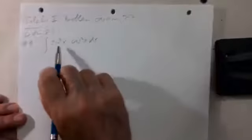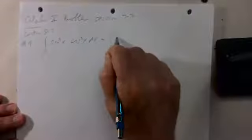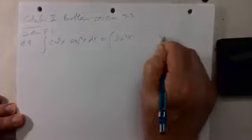When you have a product of powers of sines and cosines, you're in good shape if one of the powers is an odd integer. Three is an odd integer. If I write that as sine squared x times sine x — that's sine cubed — times cosine squared x, then I want to write sine squared x as one minus cosine squared. That's the basic trig identity.